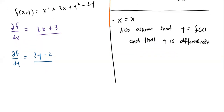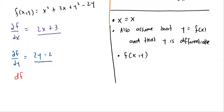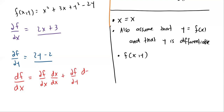Given these conditions and that f is a function of x and y, we can use the chain rule. The chain rule tells us that the regular (not partial) derivative of f with respect to x equals: partial f with respect to x, multiplied by dx/dx, plus partial f with respect to y, multiplied by dy/dx. That is: df/dx = (∂f/∂x)(dx/dx) + (∂f/∂y)(dy/dx).